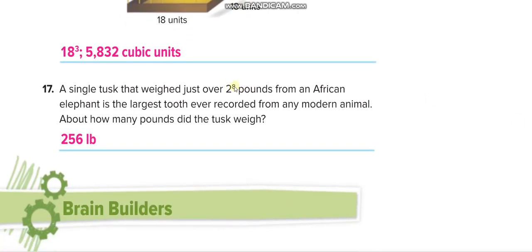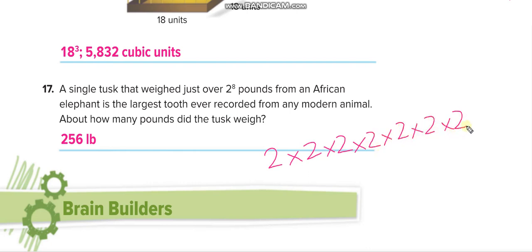2 with power 8: first write it out as 2 times 2 times 2 times 2 times 2 times 2 times 2 times 2 — eight 2s. Then calculate: 2×2=4, 4×2=8, 8×2=16, 16×2=32, 32×2=64, 64×2=128, 128×2=256. So 2⁸ equals 256.